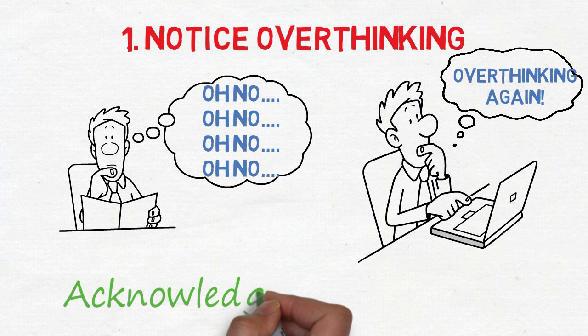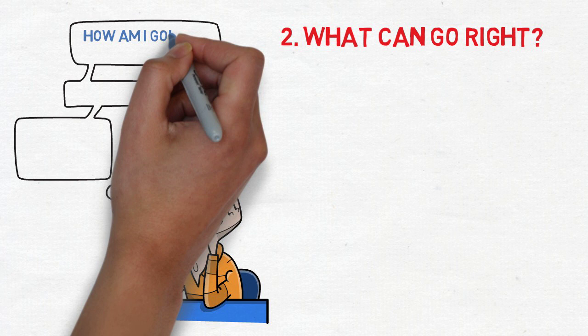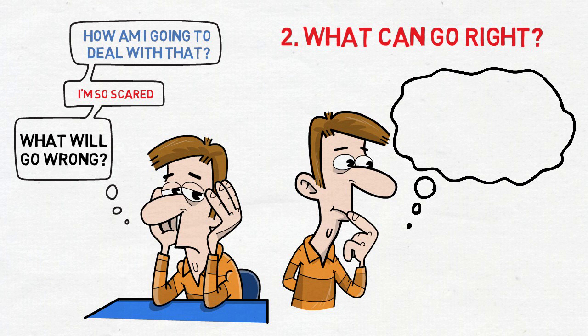Number two, what can go right? When we are overthinking the future, our thoughts always seem to be negative. What will go wrong? How am I going to deal with that? I'm so scared of that. It's always negative. Thinking this way leads to more worry, more stress, and more overthinking. When you find yourself spiraling in a negative picture of the future, stop and visualize what could go right. Picture things ending the perfect way, and then move on with your day.